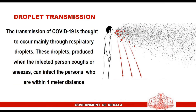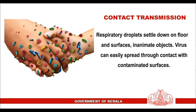Droplet transmission. The transmission of COVID-19 is thought to occur mainly through respiratory droplets. These droplets, produced when the infected person coughs or sneezes, can infect persons who are within one meter distance. Contact transmission: respiratory droplets settle down on floors and surfaces, inanimate objects. The virus can easily spread through contact with contaminated surfaces.